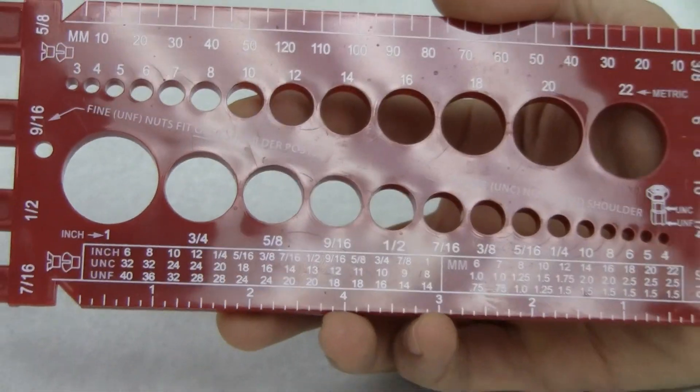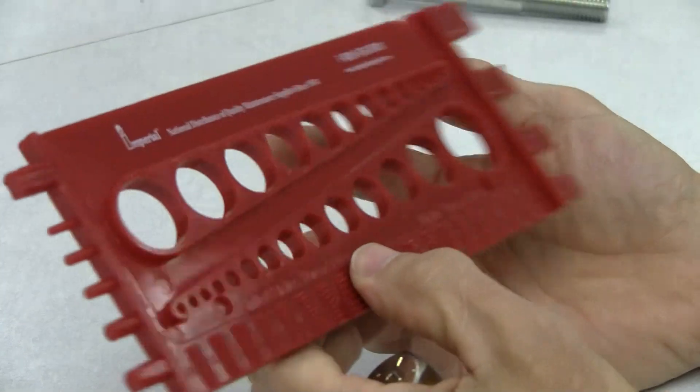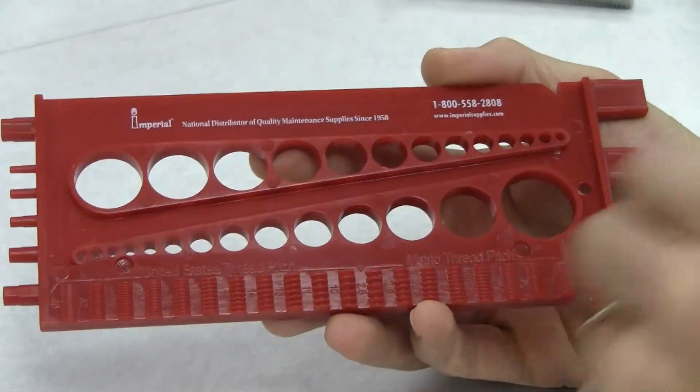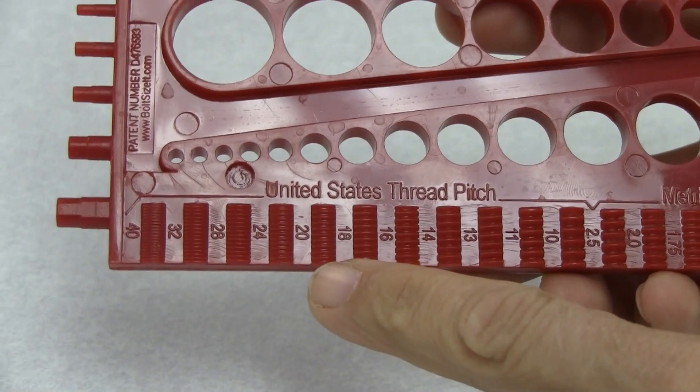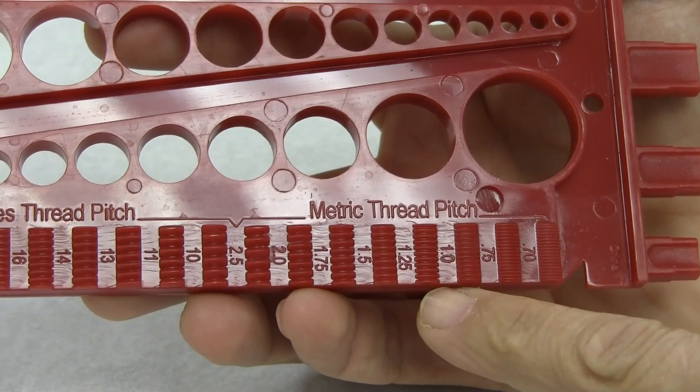Once we have our diameter, what we want to do is check our thread pitch. In order to do that, we will take and turn our gauge over and look at our thread pitch gauge on the back side. We do have American Standard over on this side, and we also have metric thread pitch on this side.